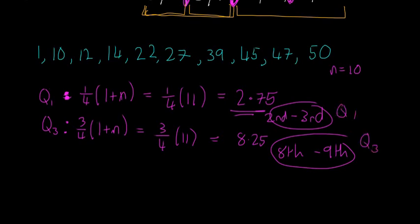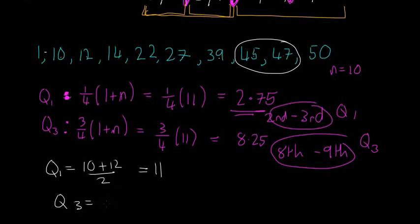So to do that quickly, I'll go in white. And Q1 is going to be 10 plus 12 divided by 2, which is equal to 11. And then Q3 is going to be equal to our 8th and our 9th. So 1, 2, 3, 4, 5, 6, 7, 8, 9. So it's between 45 and 47. So that's just going to be 46 if we add them both together and divide them by 2.